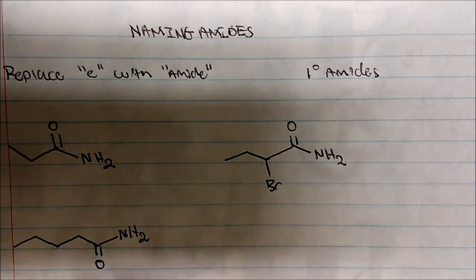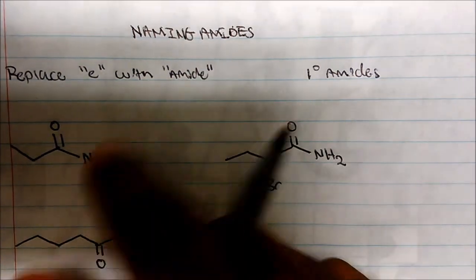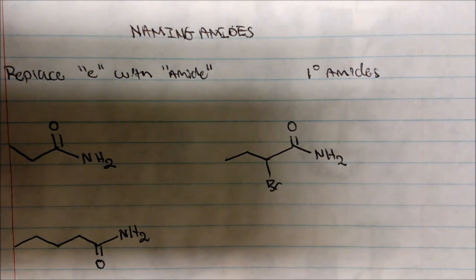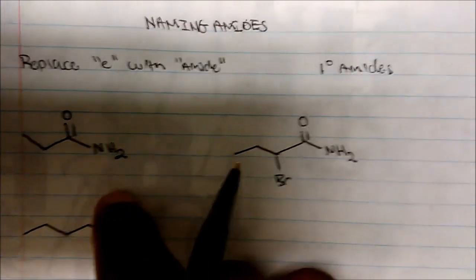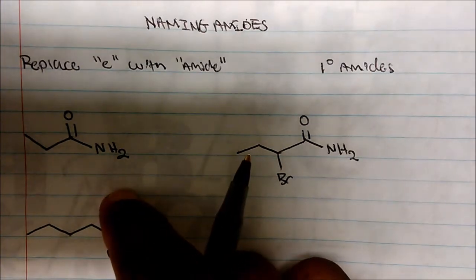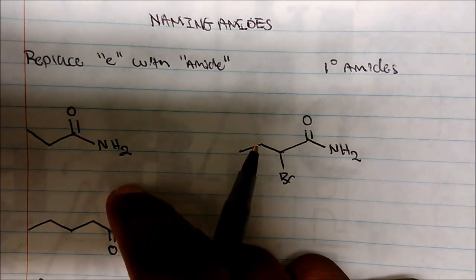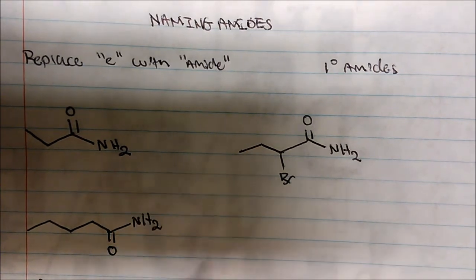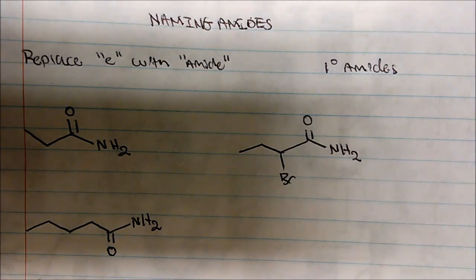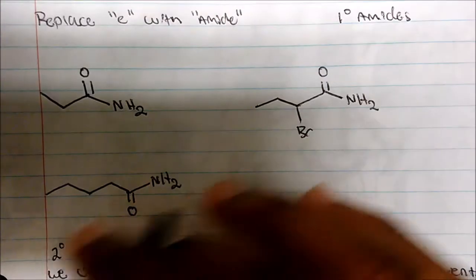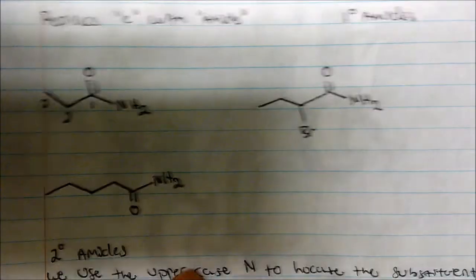These are primary amides — we have two hydrogens bonded to the nitrogen. To name them, we look at the longest continuous carbon chain, drop the -e, and add -amide. We always start counting from the carbonyl carbon.